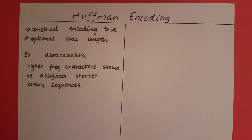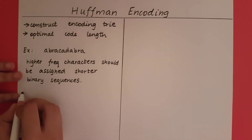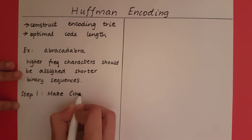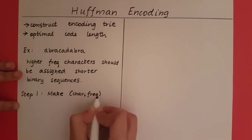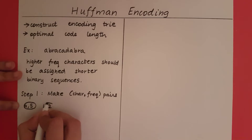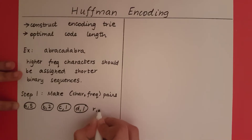Now with this in mind, let's go on to what the Huffman encoding algorithm does. Let's take the same example of 'Abracadabra.' Step one is to make character-frequency pairs. So: A appears five times, B appears twice, C appears once, D appears once, and R appears twice.